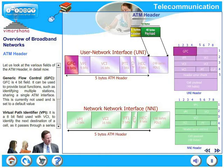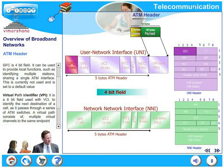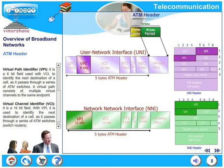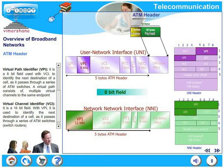Let us look at the various fields of the ATM header in detail. First, Generic Flow Control (GFC) — this is a 4-bit field. It can be used to provide local functions such as identifying multiple stations sharing a single ATM interface. Currently, this field is not used and is set to a default value. Next, Virtual Path Identifier (VPI) — this is an 8-bit field used with VCI to identify the next destination of a cell as it passes through a series of ATM switches.